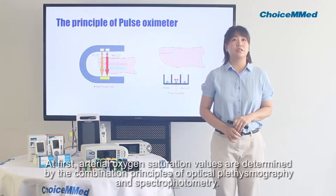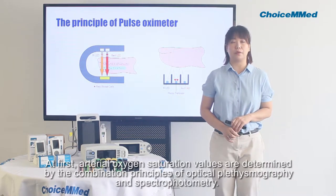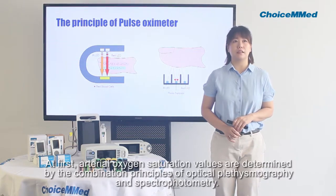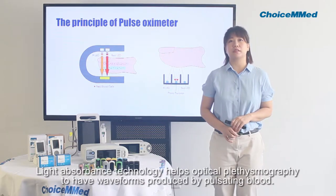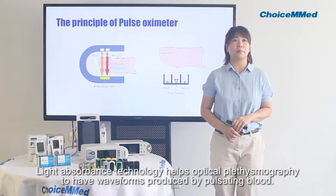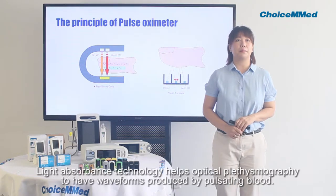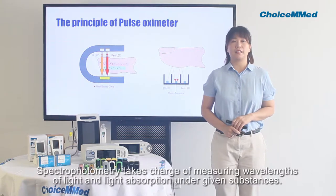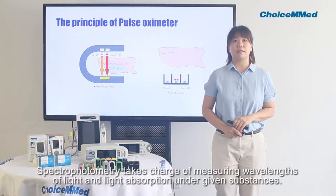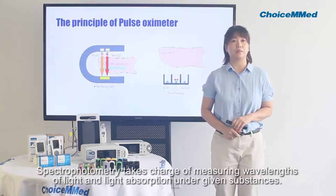At first, arterial oxygen saturation values are determined by the combination of optical plethysmography and spectrophotometry. Light absorbance technology helps optical plethysmography produce waveforms from pulsating blood. Spectrophotometry takes charge of measuring wavelengths of light and light absorption.